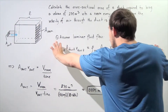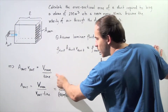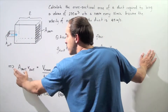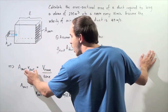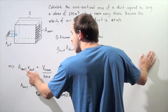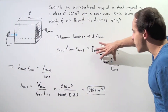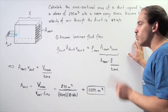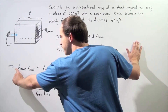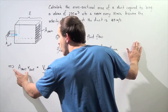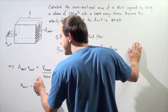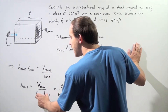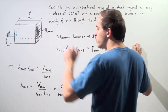That means we can rewrite this equation as: the cross-sectional area of the duct multiplied by the velocity of air within the duct equals the volume of the room divided by time. Solving for the unknown, the cross-sectional area of the duct equals the volume of the room divided by the product of the time and the velocity of air within the duct.